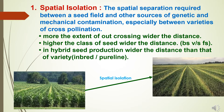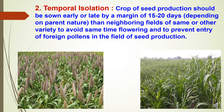This also applies in the case of inbreeds and pure lines. The second type is temporal isolation. Crops in seed production fields should be sown early or late by a margin of 15 to 20 days, depending on parent nature, compared to neighboring fields of the same or other varieties, to avoid simultaneous flowering and to prevent entry of foreign pollens into the seed production field.